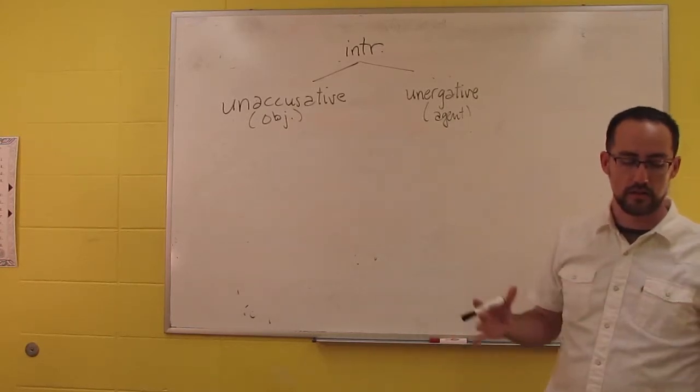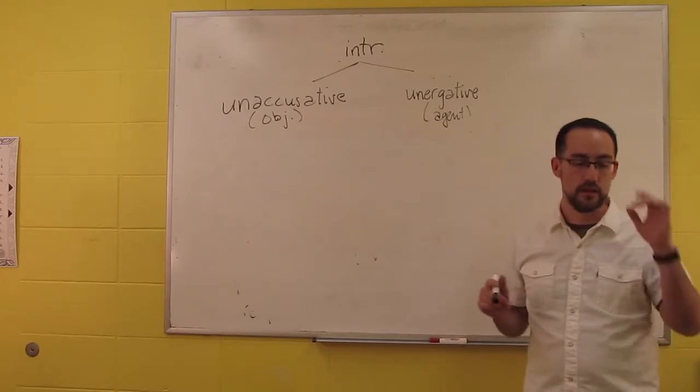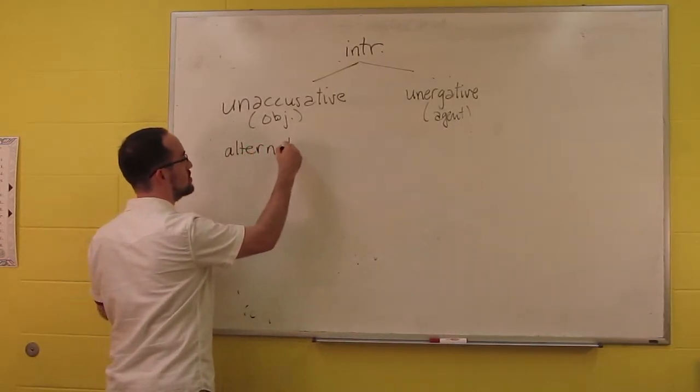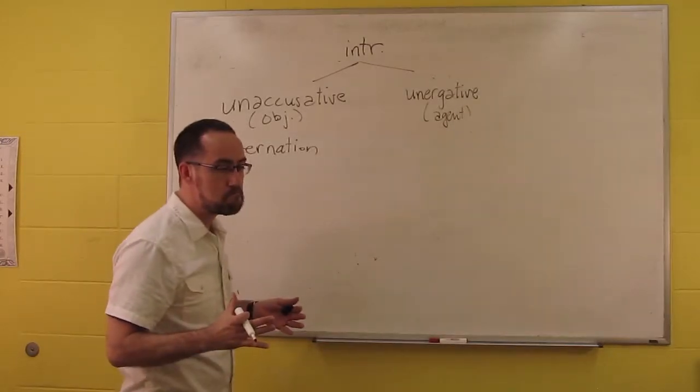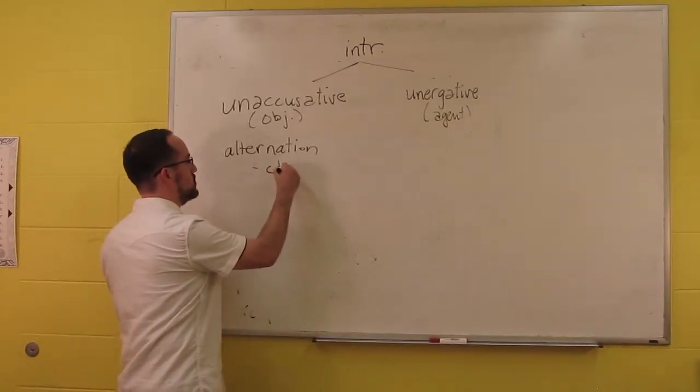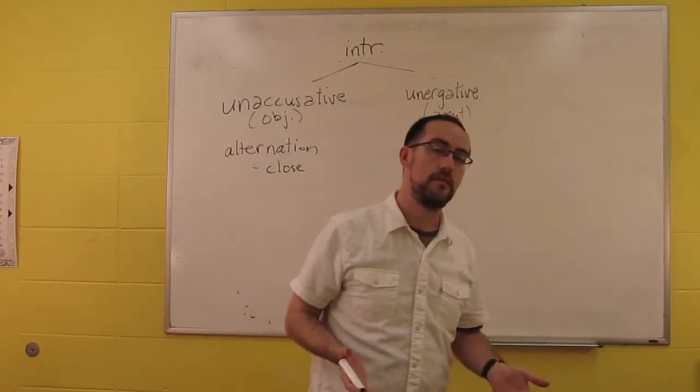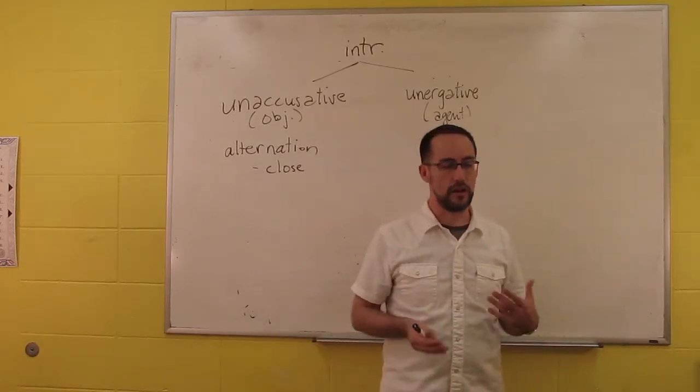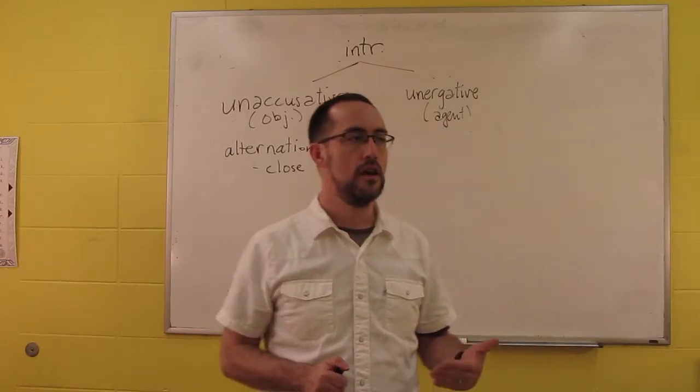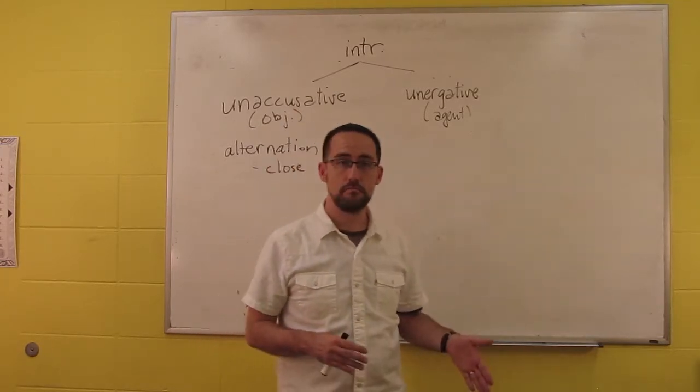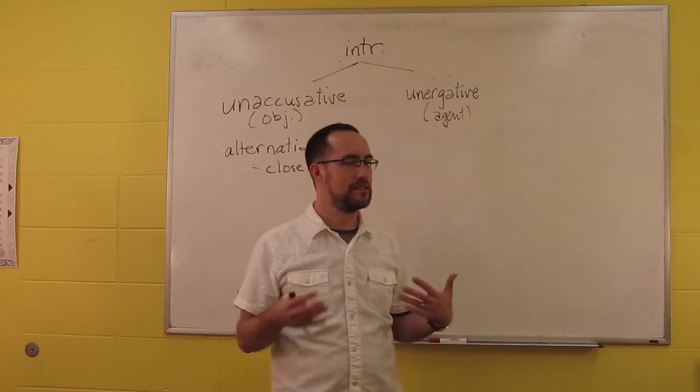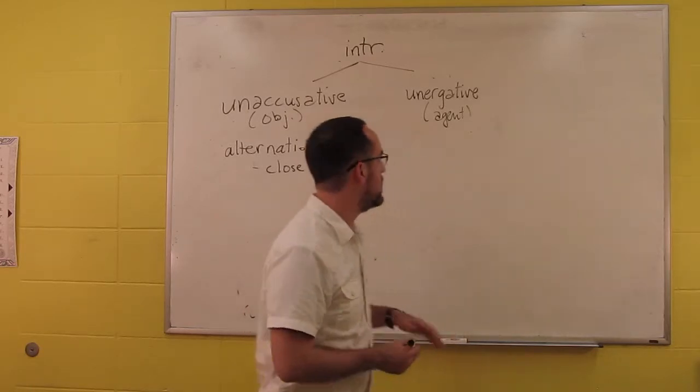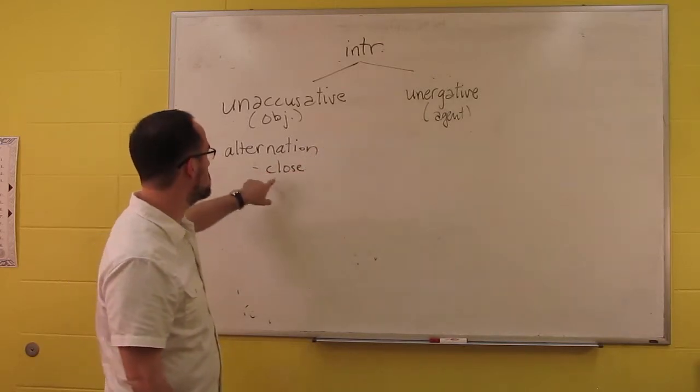In English, there's a good number of them. Unaccusatives alternate with causatives, have the alternations that we saw earlier. One example is close. The door closed. That's an intransitive. But it alternates with the transitive, I closed the door. That works for a verb like close. It doesn't work for a verb like run. You can say I ran the race, you can say I ran, but you can't really say Bill ran me, and you can't really say the race ran. Those don't work. So run would be an unergative. Close would be an unaccusative.